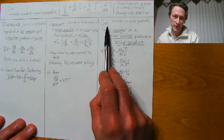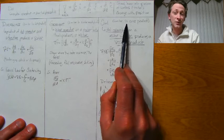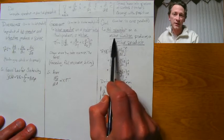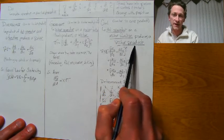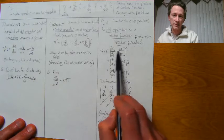The curl is the third thing that can happen, and it's similar to a cross product. The del operator on a vector function produces a vector product. Here it is in matrix form.